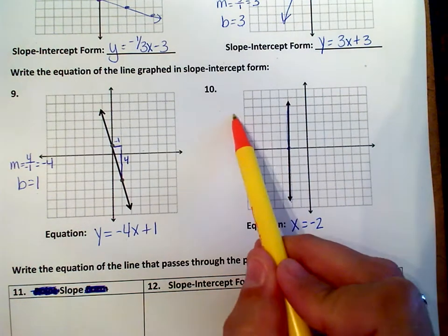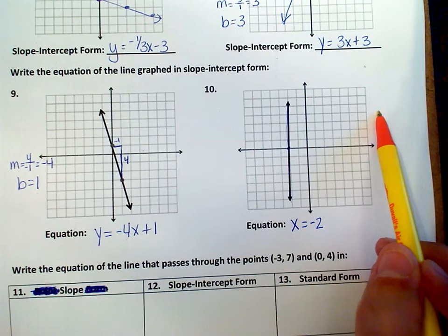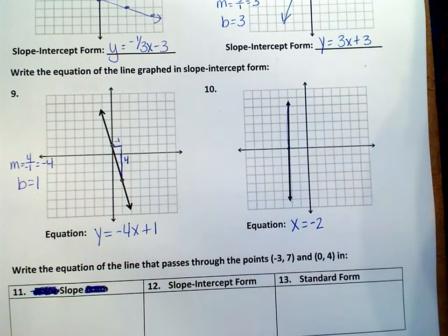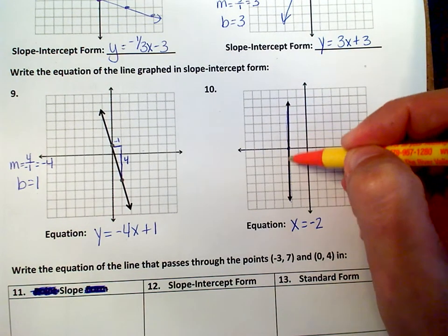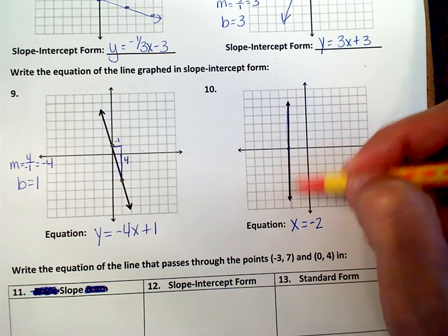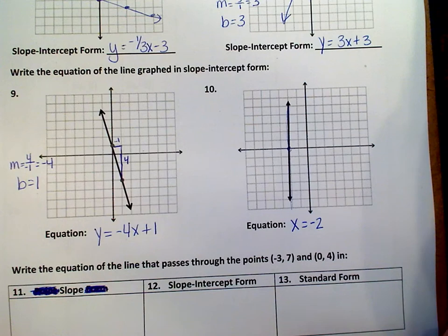Remember, horizontal lines cross the y-axis only, so they're going to be y equals whatever the y-intercept is. Vertical lines cross the x, so it's x equals whatever the x-intercept is.